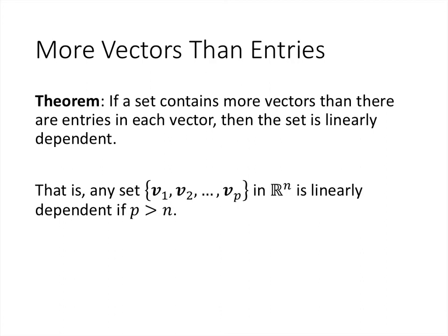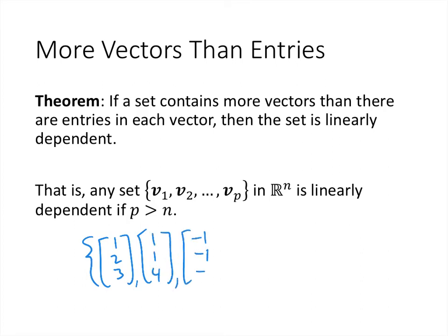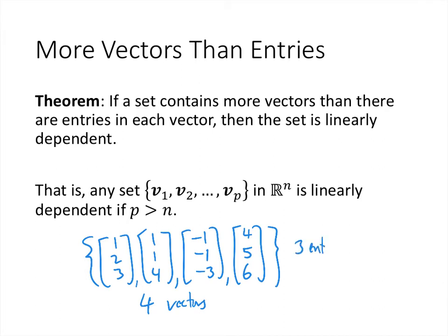We have two more theorems for quickly identifying linearly dependent sets. The first says: if a set contains more vectors than there are entries in each vector, then the set is linearly dependent. For example, a set of four vectors each with three entries — such as {(1,2,3), (1,1,4), (-1,-1,-3), (4,5,6)} — would be linearly dependent by this theorem, even without computing anything.